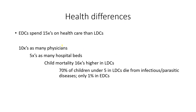Looking at health differences between countries: economically developed countries spend 15 times more on health care than least developed countries. There are 10 times as many physicians and five times as many hospital beds in rich countries. Child mortality is 16 times higher in poor countries. Seventy percent of children under five in poor countries die from infectious and parasitic diseases that are preventable — compared to only 1% in rich countries.